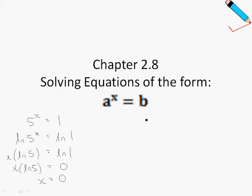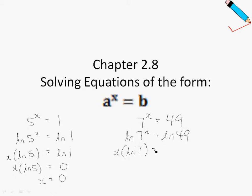One more example. Let's say I have 7 to the power of x equals to 49. To solve for x, I will take ln: ln 7^x equals to ln 49. Similarly, the power here can be brought down. And finally, x is just ln 49 divided by ln 7, which is just 2.